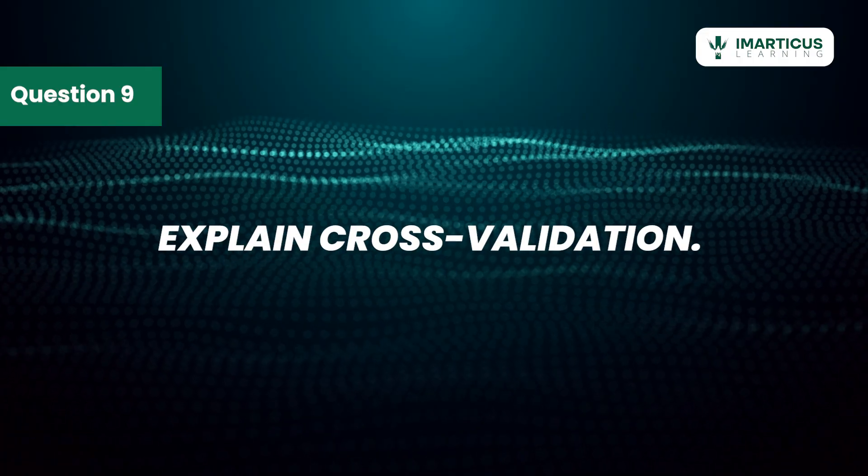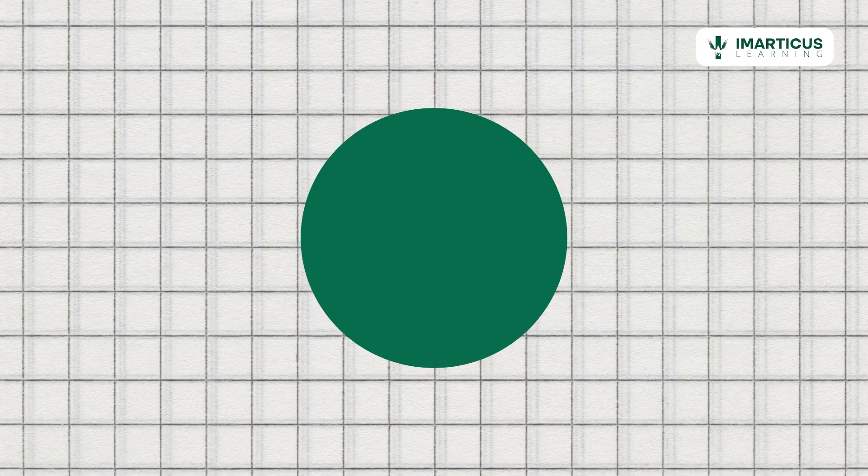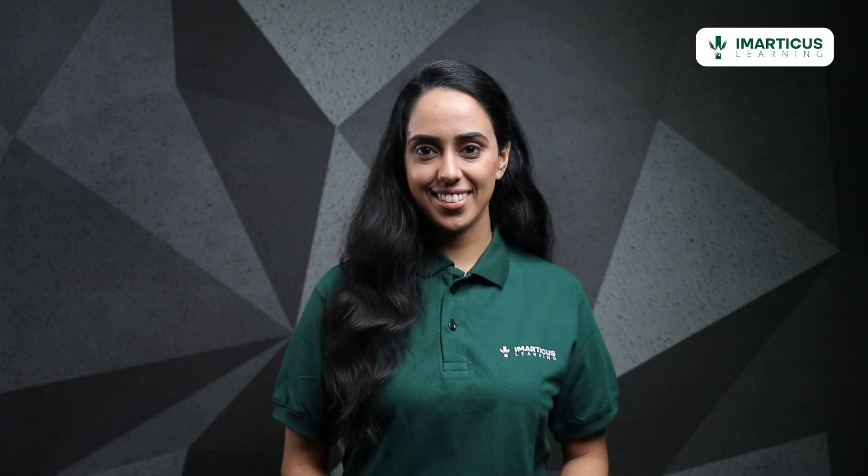Explain cross-validation. Cross-validation is like having multiple rounds in a game to ensure you're on top of your skills. By splitting the data into several folds, we can test how well our model performs on different subsets, ensuring it generalizes well to unseen data. Practice makes perfect.